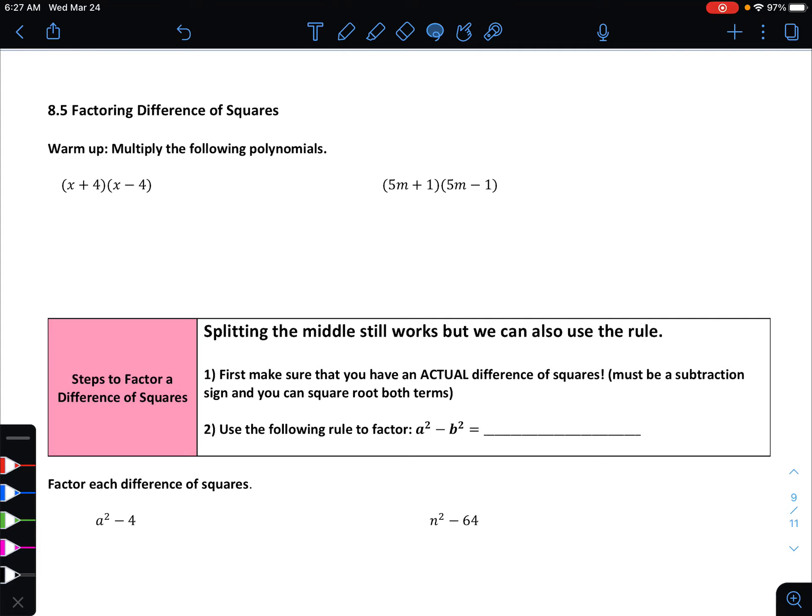All right guys, so in section 8.5 we're going to take a look at a special type of factoring that shows up rather frequently, which is when we are looking at factoring what's called a difference of squares.